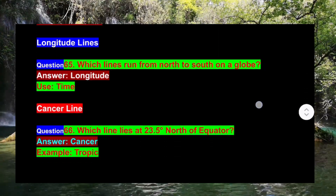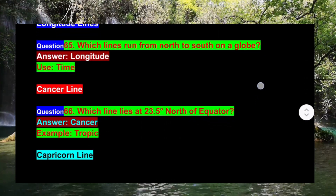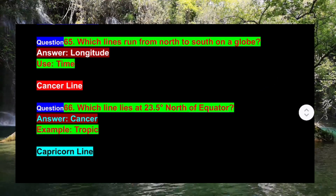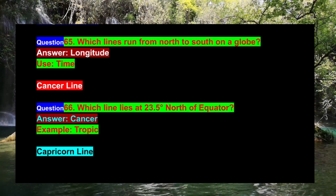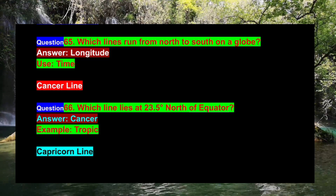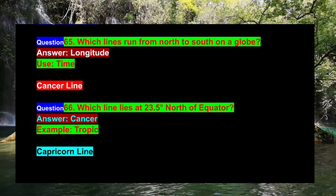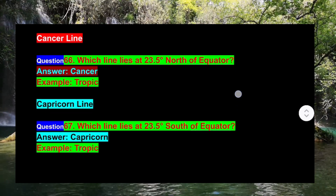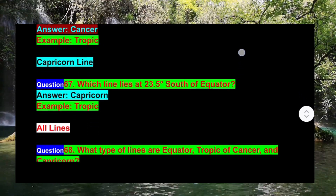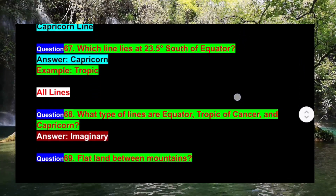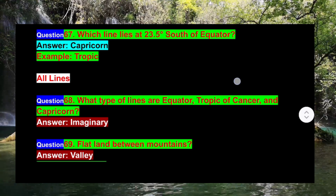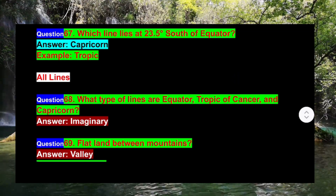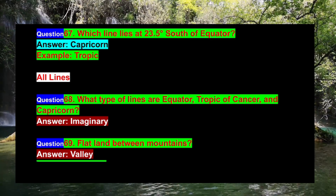Question 64: What do latitude lines help us know? Answer: Position. Question 65: Which lines run from north to south on a globe? Answer: Longitude. Use: Time. Question 66: Which line lies at 23.5 degrees north of the equator? Answer: Tropic of Cancer. Question 67: Which line lies at 23.5 degrees south of the equator? Answer: Tropic of Capricorn.